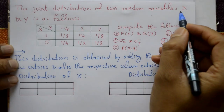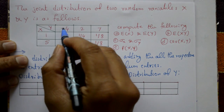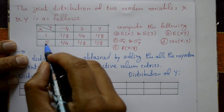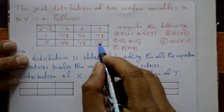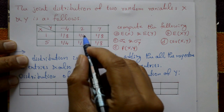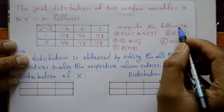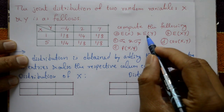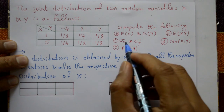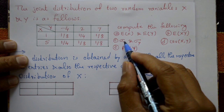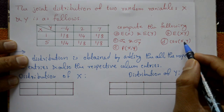The joint distribution of two random variables X and Y is as follows. X values are 1 and 5; Y values are minus 4, 2, and 7. The joint probabilities j(1,1), j(1,2), j(1,3), j(2,1), j(2,2), j(2,3) are 1/8, 1/4, 1/8, 1/4, 1/8, 1/8 respectively. Compute: (a) E(X) and E(Y), (b) E(XY), (c) standard deviation of X and Y, (d) covariance of X and Y.